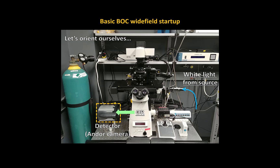Alternatively, you can send that light to the right side here and to our Hamamatsu camera. This detector is really good for fast imaging experiments — so if you're doing calcium dynamics, for example. It doesn't have quite the sensitivity or ability to detect light as our Andor camera does, but if your sample is bright and you want to get really fast information, the Hamamatsu camera can provide that better than the Andor camera can.